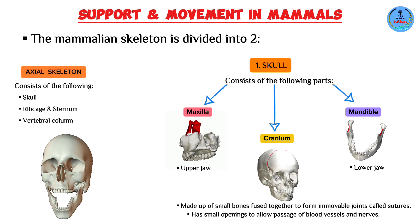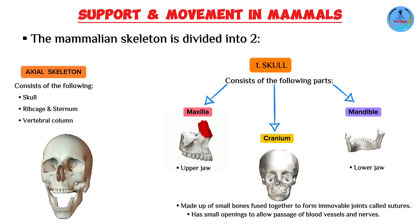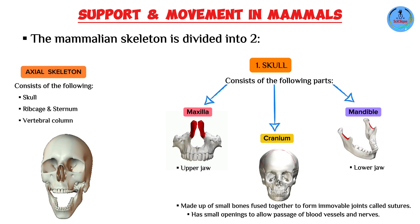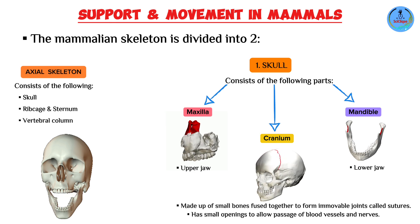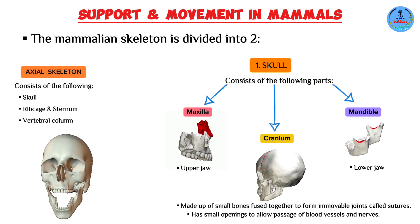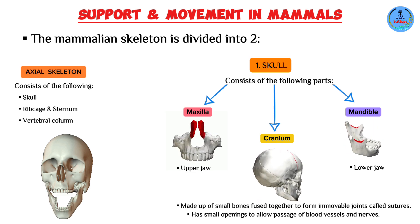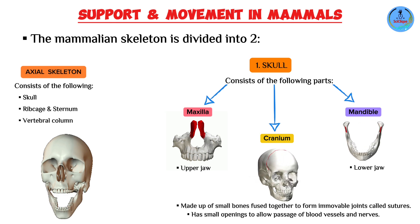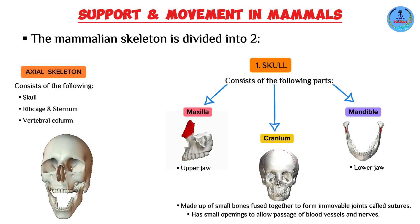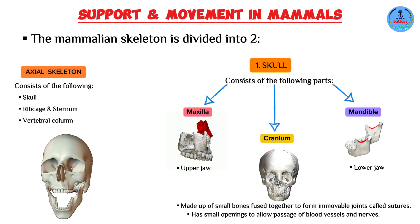Note the term 'articulate' — you will come across it frequently. When one bone articulates with another, this simply refers to the point where two bones join one another, the point of connection between two bones to form a joint. So when I say bone A articulates with bone B, I simply mean they join or meet together to form a joint.